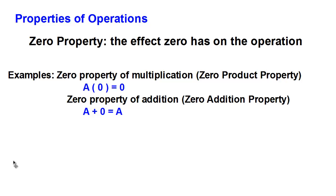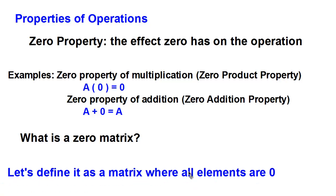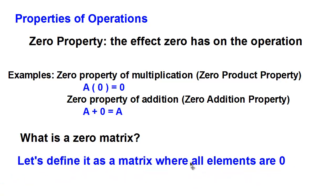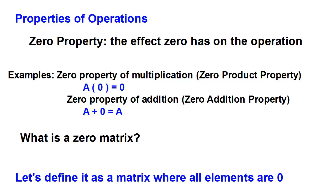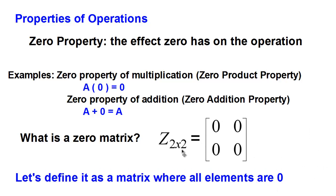So then the next question is, how does this apply to matrices? What would be a zero matrix? Well, let's define a zero matrix as a matrix where all the elements are equal to zero. For example, with a two-by-two matrix, let's call it matrix Z for zero — it would be a two-by-two matrix where all the elements are zero.